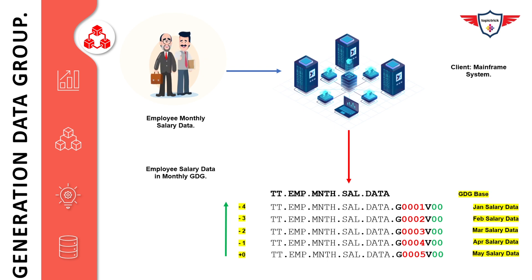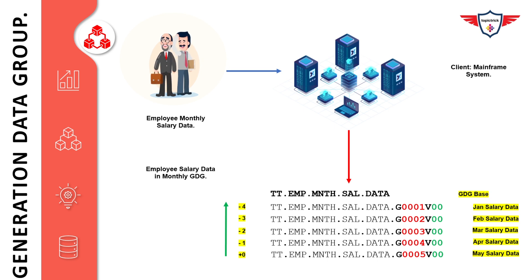Important point: each time a generation data set is processed, a new generation is added to the GDG base. This new version becomes the current generation and the old current generation becomes the previous version. To refer to generations, you use relative generation numbers. Generation 0 refers to the current generation. Minus 1, minus 2, and minus 3 refer to the previous three generations. Plus 1 refers to the next generation. So if you specify 0 in your JCL, you refer to the current generation — May data. Minus 1 is April, minus 2 is March, minus 3 is February, and minus 4 is January.